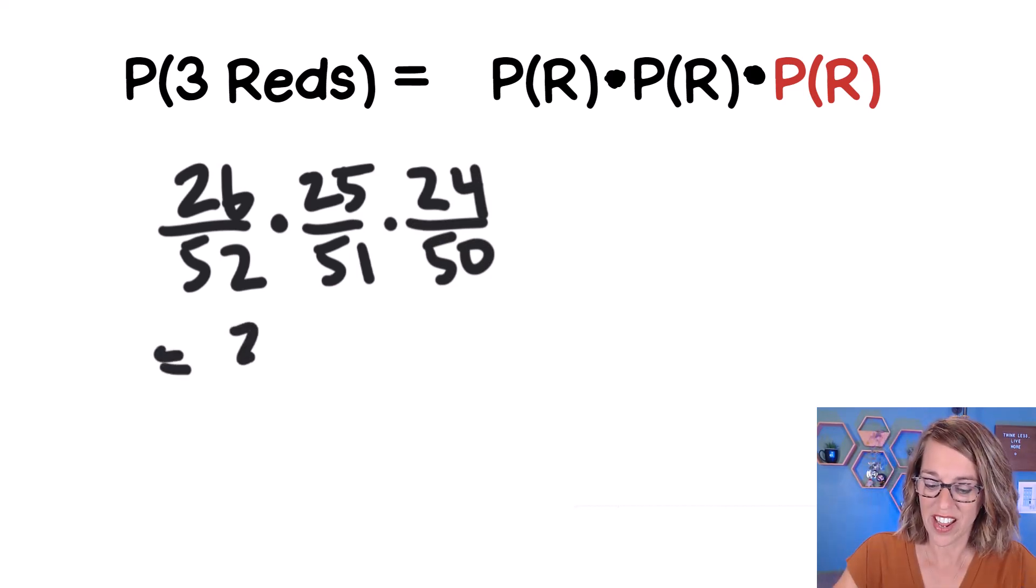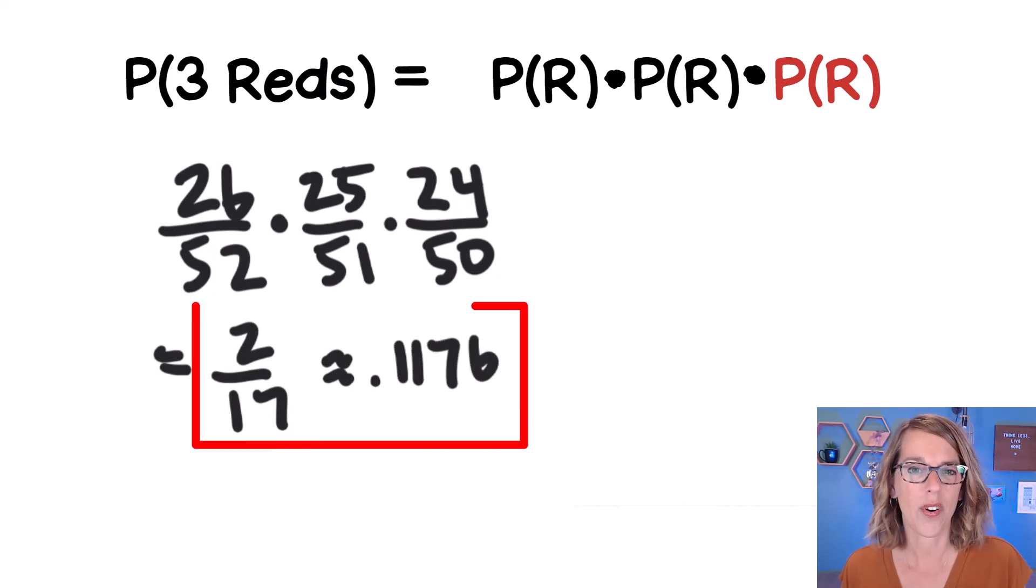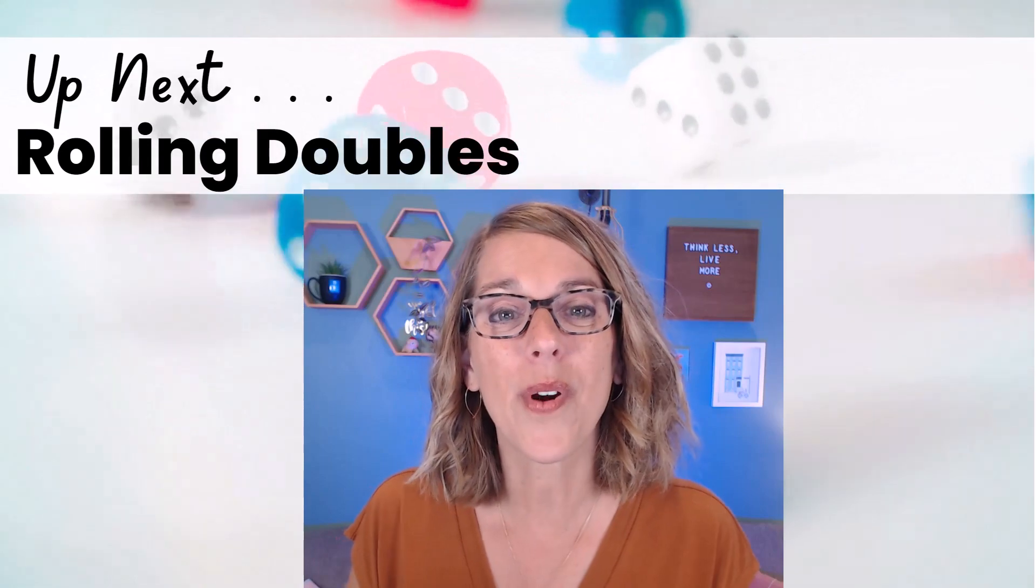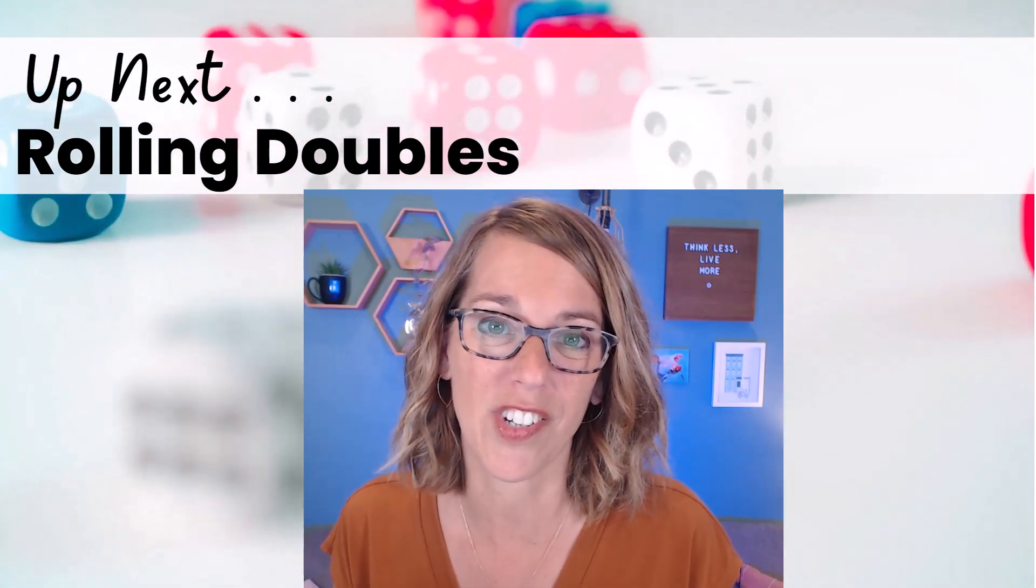As a reduced fraction, I get 2 out of 17. Or as a decimal, I get 0.1176, or about 11.8%. Great job with these conditional probabilities. Learn more about probability and rolling doubles in this next video. Thanks so much for watching.